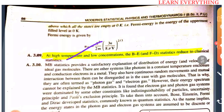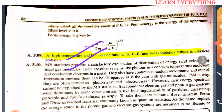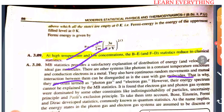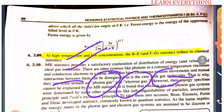MB statistics provides a satisfactory explanation of the distribution of energy and velocity of ideal gas molecules. Other systems like photons in a cavity and conduction electrons in metals also have continuous random motion and negligible mutual interaction — similar to gas molecules. That is why they are termed photon gas and electron gas.